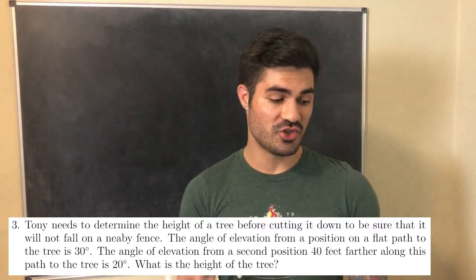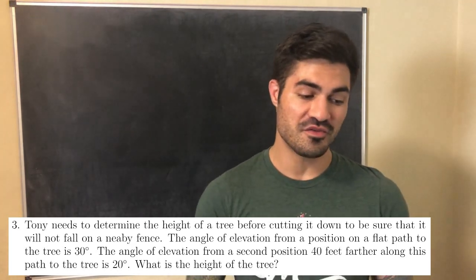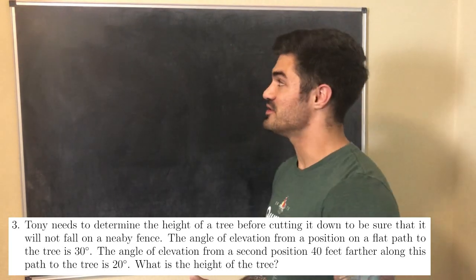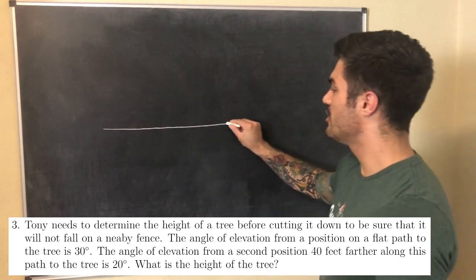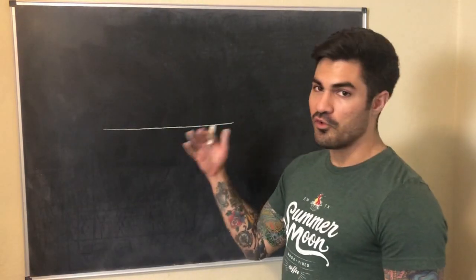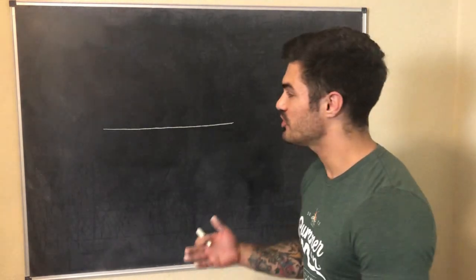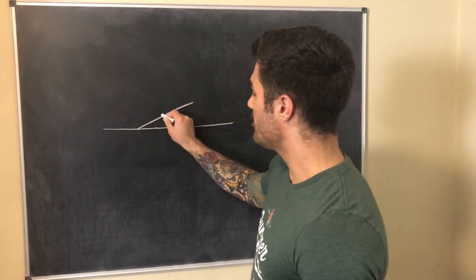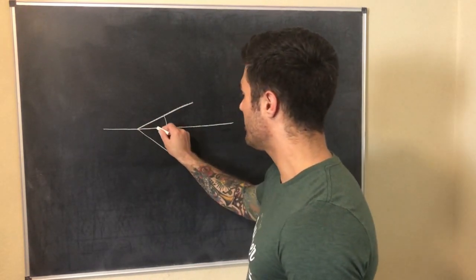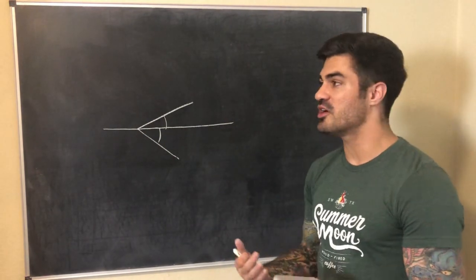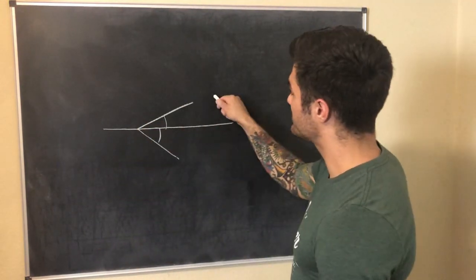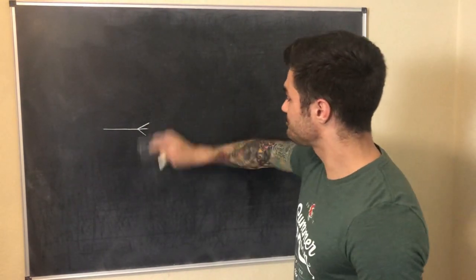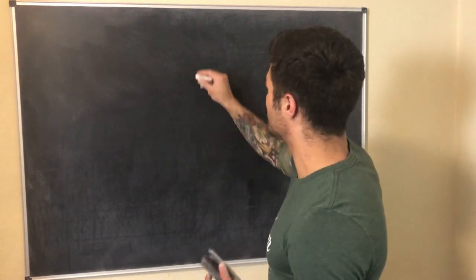Problem three is a bit more involved. Tony needs to determine the height of a tree before cutting it down to be sure it won't fall on a nearby fence. The angle of elevation from a position on a flat path to the tree is 30 degrees. With angle of elevation and angle of depression, we're always measuring an angle relative to a horizontal line — elevation is above the horizontal, depression is below.